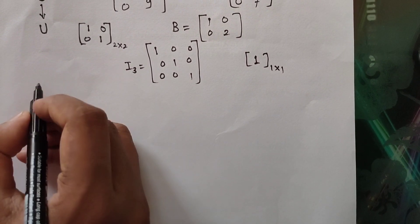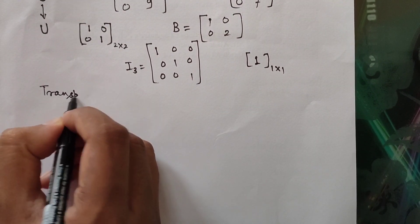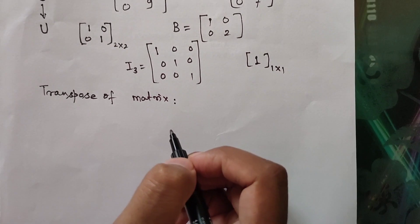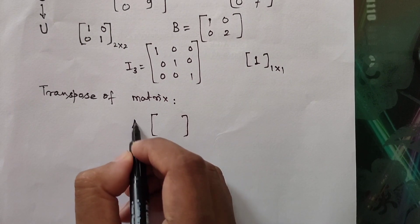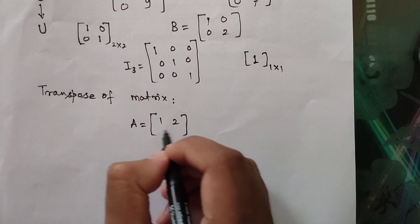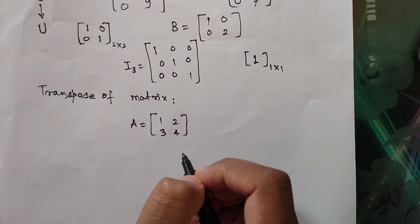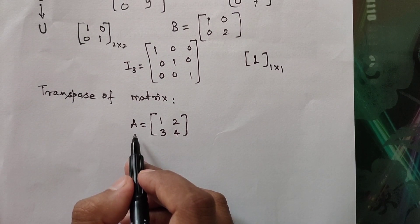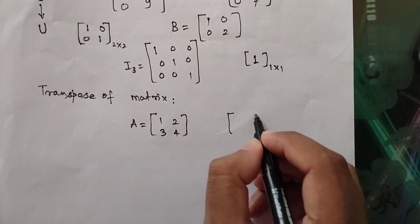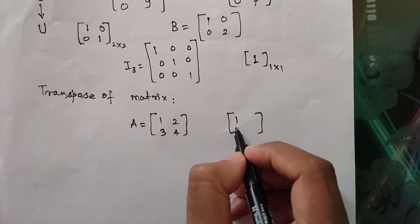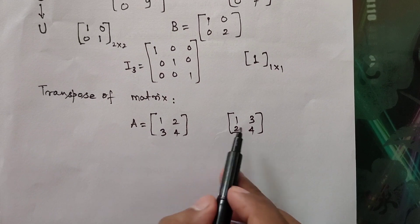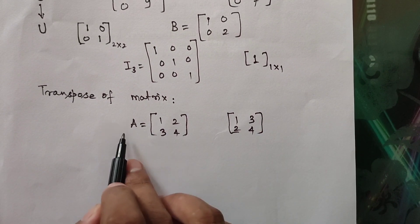The next definition is the transpose of a matrix. Suppose we are given matrix A = [[1, 2], [3, 4]]. The transpose of a matrix is obtained by interchanging the rows and columns. So this row will become a column and that row will become another column. This resulting matrix is the transpose of A, denoted by A' or A transpose.